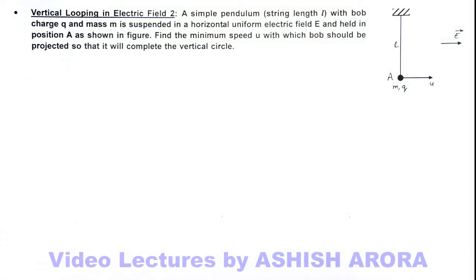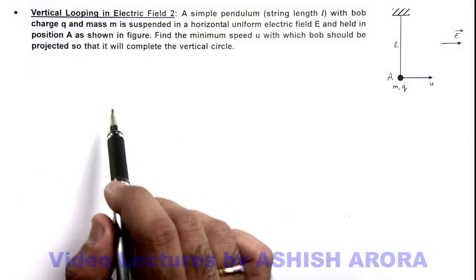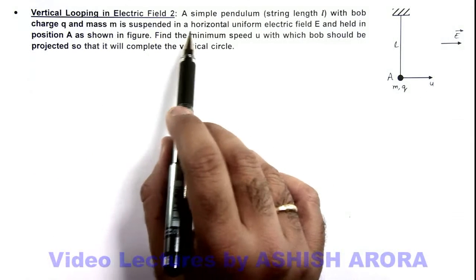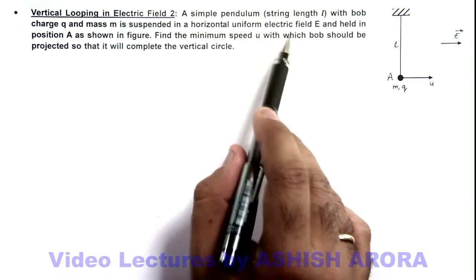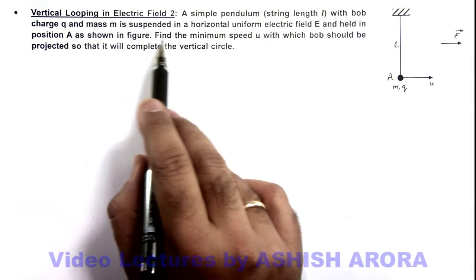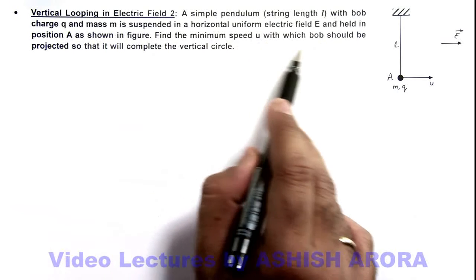In this illustration, we'll study about the vertical looping in electric field. Here, we are given that a simple pendulum with string length l with bob, charge q and mass m is suspended in a uniform electric field E.